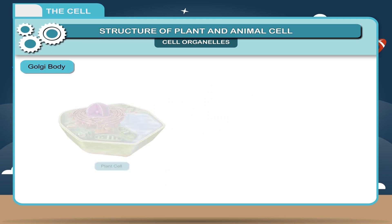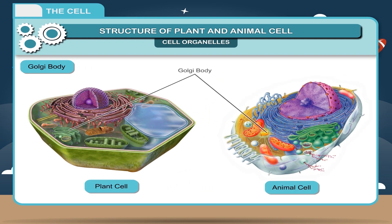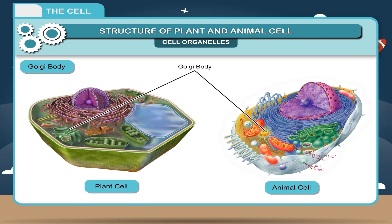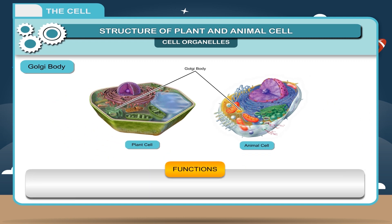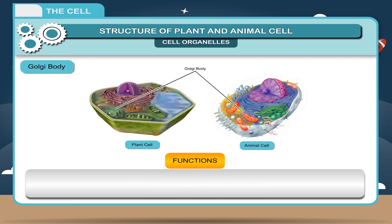Golgi body. They occur near the nucleus of the cell and consist of stacks of thread-like thin membranes of variable shapes and sizes. Their function is that they are involved in cell secretion.